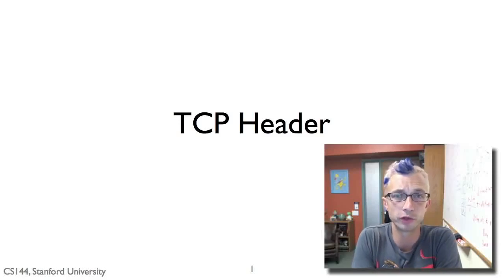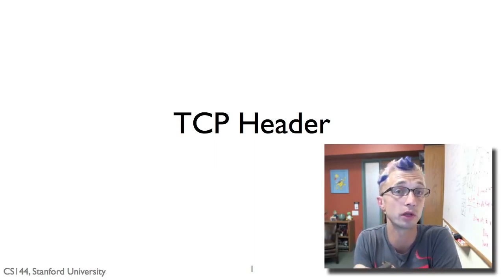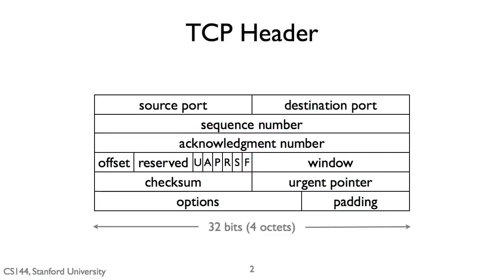In this video I'm going to give a brief overview of the TCP header. If you want more information there's tons of documentation online, but this is just a brief summary of the fields in the header and their meaning. A standard TCP header is 20 bytes long — we can see here that there are five rows of four octets each. Additionally you can have options after the TCP header, but I'm not going to go into those now.